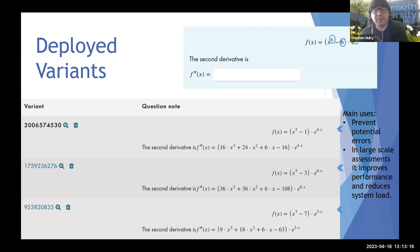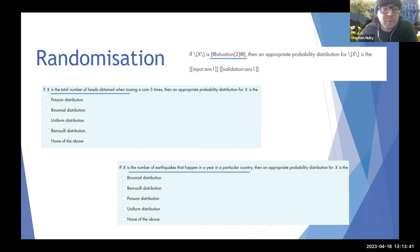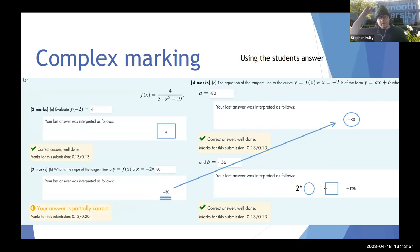Here's another example of randomization — you don't just have to randomize numerical variables, you can randomize text within a question. In this particular question, the different distributions and the multiple choice answers are the same, but the question text is being randomized: one version asks for the distribution of the number of heads when you toss a coin five times, and another asks for the number of earthquakes, and the answer will depend on the text shown to the student.